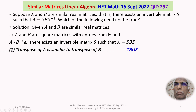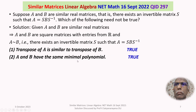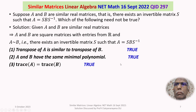Option 1 — transpose of A is similar to transpose of B — is true; it is a property. Option 2 — A and B have the same minimal polynomial — is also a property, which is true. Option 3 — trace of A is equal to trace of B — is also true and another property. All three are first confirmed as true.